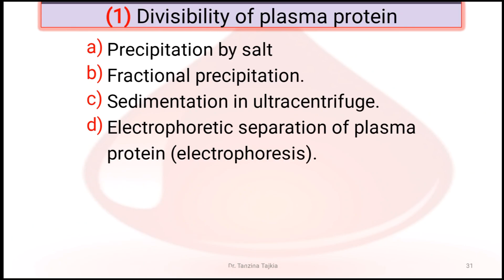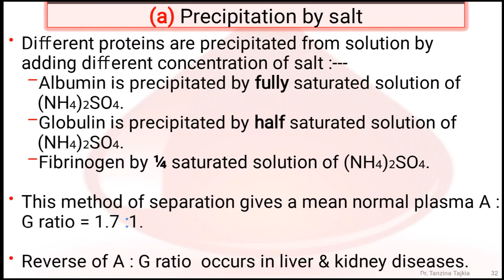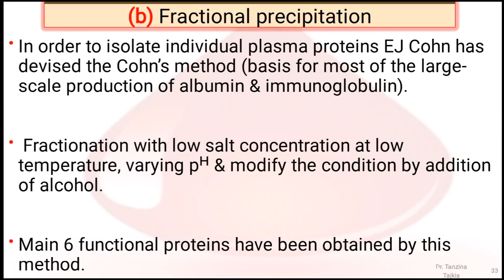Divisibility of plasma protein has four subheadings: precipitation by salt, fractional precipitation, sedimentation in ultracentrifuge, and electrophoretic separation. Different proteins are precipitated from solution by adding different concentrations of salt. This method of separation gives a mean normal plasma albumin-to-globulin ratio of about 1.7:1. This ratio changes in liver and kidney disease. Fractional precipitation is used to isolate individual plasma proteins using low salt concentration, low temperature, varying pH, and adding alcohol.